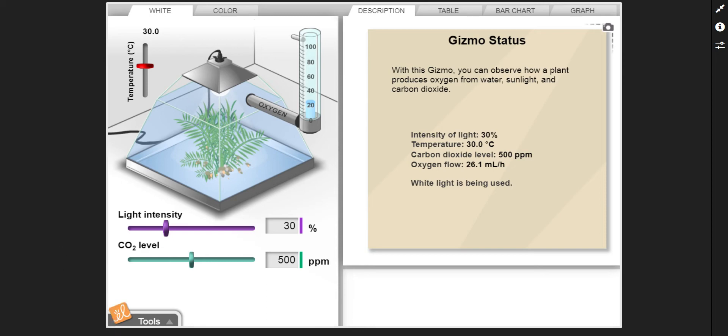All right, good morning. What we're going to be looking at today is an overview of activities A, B, and C for the photosynthesis gizmo.